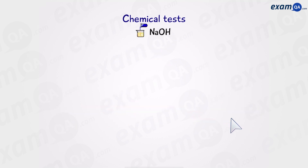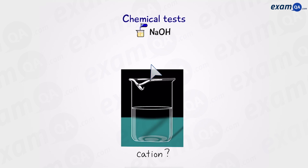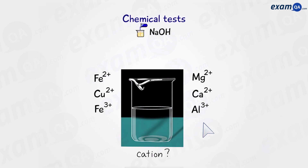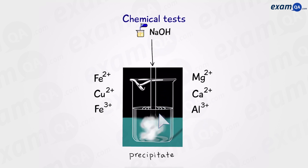Moving on to the second test: using sodium hydroxide to identify cations. Let's say we have a sample but we're not sure which cation is present. To find out, we're simply going to add sodium hydroxide into the sample of the cation and we should get a precipitate. The precipitates will be coloured and we can use that to work out which cation was present.